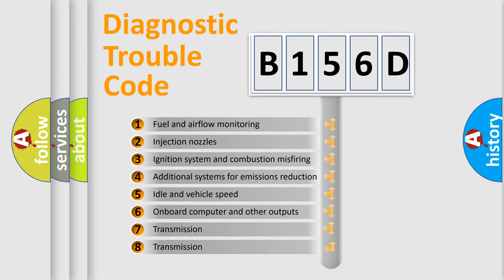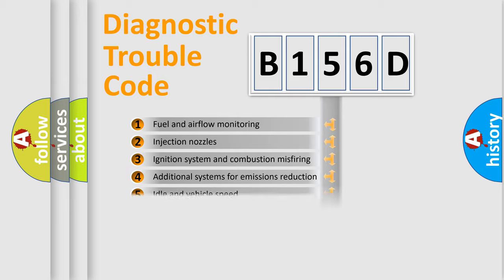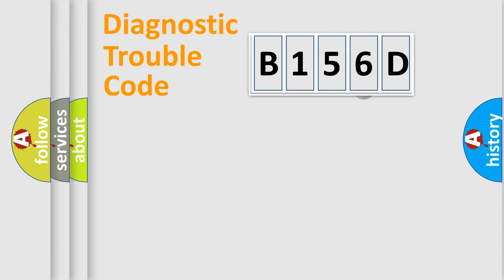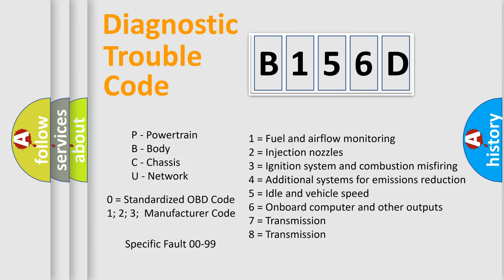The third character specifies a subset of errors. The distribution shown is valid only for the standardized DTC code. Only the last two characters define the specific fault of the group. Let's not forget that such a division is valid only if the second character code is expressed by the number zero.